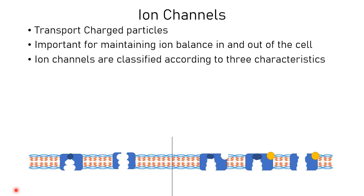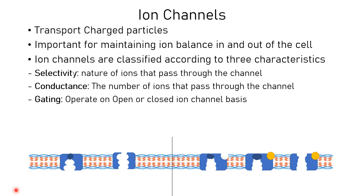Ion channels can be classified according to three characteristics. First is selectivity, which refers to the nature of the ion that passes through — some channels are very selective and only allow one type of ion, while others are less selective. Second is conductance, which refers to the number of ions that pass through the channel. Third is gating, which refers to what opens and closes the channel.